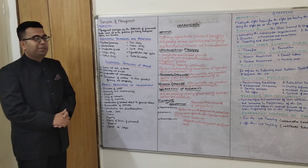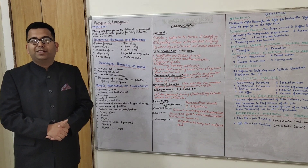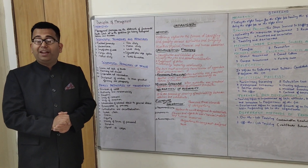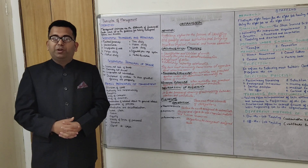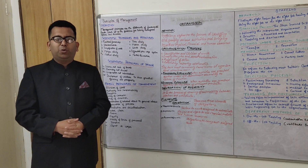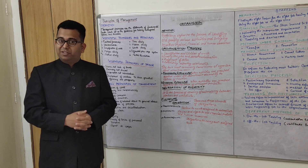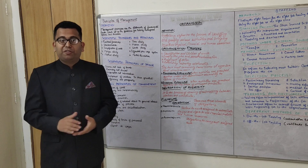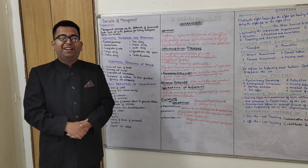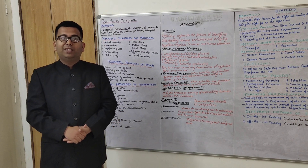The first chapter for today is principles of management. When I talk about principles, there are two — one in school and one in the course — and these principles have universal validity. I mean they are applied everywhere, like scientific principles of Newton. But we will study in detail what exactly these principles are, their characteristics, and distinguish Fayol's principles from Taylor's scientific management principles and techniques.